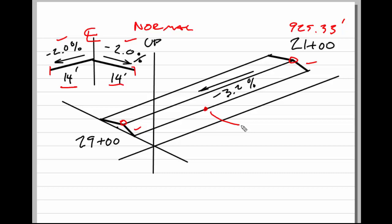Let's say we want to know the elevation on the left edge of pavement. So this will be at station 25+29 and at 14 feet left. So let's just do the math here. We know that we're going to have a slope down the center line from 21+00 to station 25+29 on the center line, and then we're going to have a slope going from the center line out to the edge of pavement. So we're going to break it into two parts.